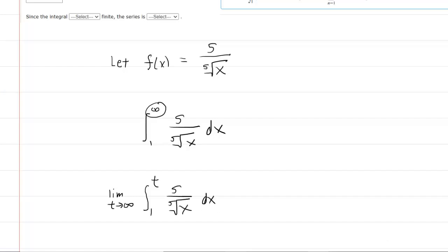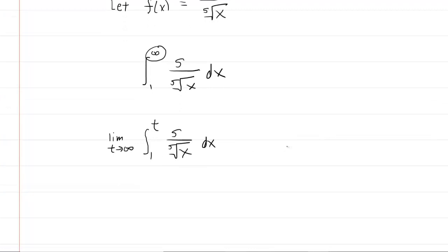Now, to integrate this function, we're going to need to rewrite it. Let's begin with the fifth root of x. We all know that the fifth root of x is equivalent to x to the 1 fifth. And then furthermore, 5 over x to the 1 fifth, if you were to essentially move the x to the 1 fifth to the numerator, you would have 5x raised to the negative 1 fifth. So let's rewrite the integrand in that manner. We take our limit from 1 to t, and we now have 5x raised to the negative 1 fifth. We can now evaluate the integral.